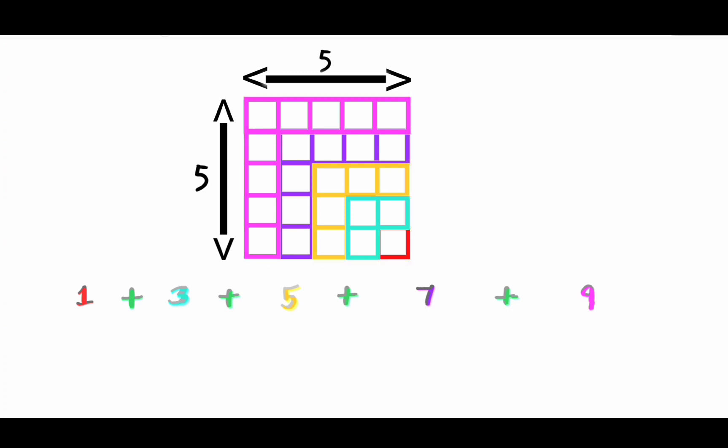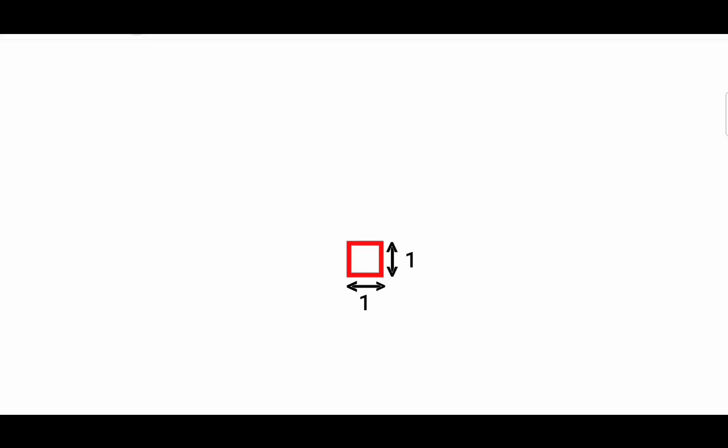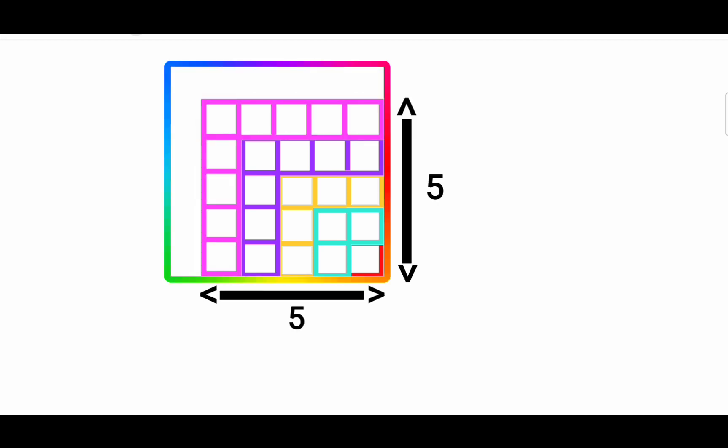If we put all these observations together, the conclusion is beautiful. Generally, the first odd number forms a 1 by 1 square. The first 2 odd numbers form a 2 by 2 square. First 3 odd numbers form a 3 by 3 square. Then 4 by 4 and so on.